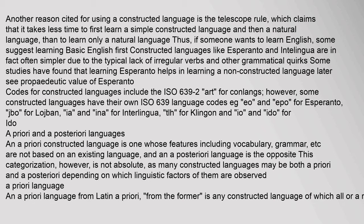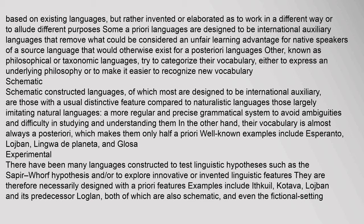An a priori constructed language is one whose features — including vocabulary and grammar — are not based on an existing language, while an a posteriori language is the opposite. This categorization is not absolute, as many constructed languages may be both depending on which linguistic factors are observed. Some a priori languages are designed to be international auxiliary languages that remove the unfair learning advantage for native speakers of a source language. Other so-called philosophical or taxonomic languages try to categorize their vocabulary either to express an underlying philosophy or to make new vocabulary easier to recognize.